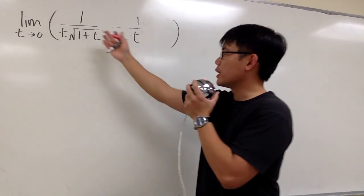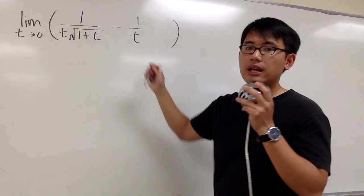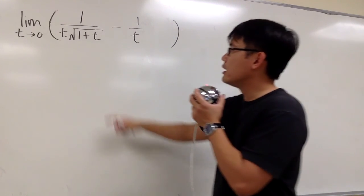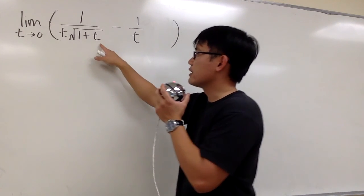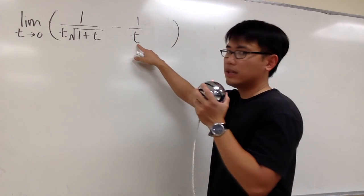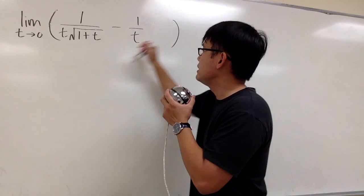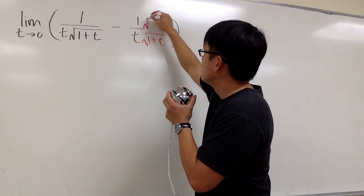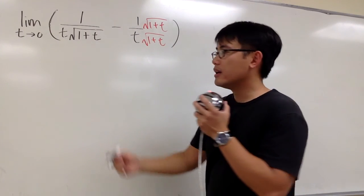So let's just focus on the algebra we can do with this. We are subtracting two fractions, so let's get the common denominator first to combine them. For the first fraction, we have t times the square root of 1 plus t on the denominator, but for the second one we just have t. So let's multiply the top and bottom by the square root of 1 plus t, so they will have the same denominator and we can continue.